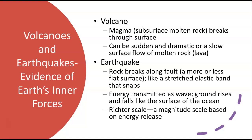Earthquakes, on the other hand, are when the rock breaks along a fault, which is a more or less flat surface. It's kind of like stretching an elastic band until it snaps because of all the built-up pressure. Plates rub along each other, pressure builds up, and finally that pressure snaps and all that energy gets released in wave form — that's an earthquake. The ground rises and falls just like the surface of the ocean. Of course, we have the Richter scale, which is a magnitude scale based on energy release. I think the one I went through was a 1 on the Richter scale.